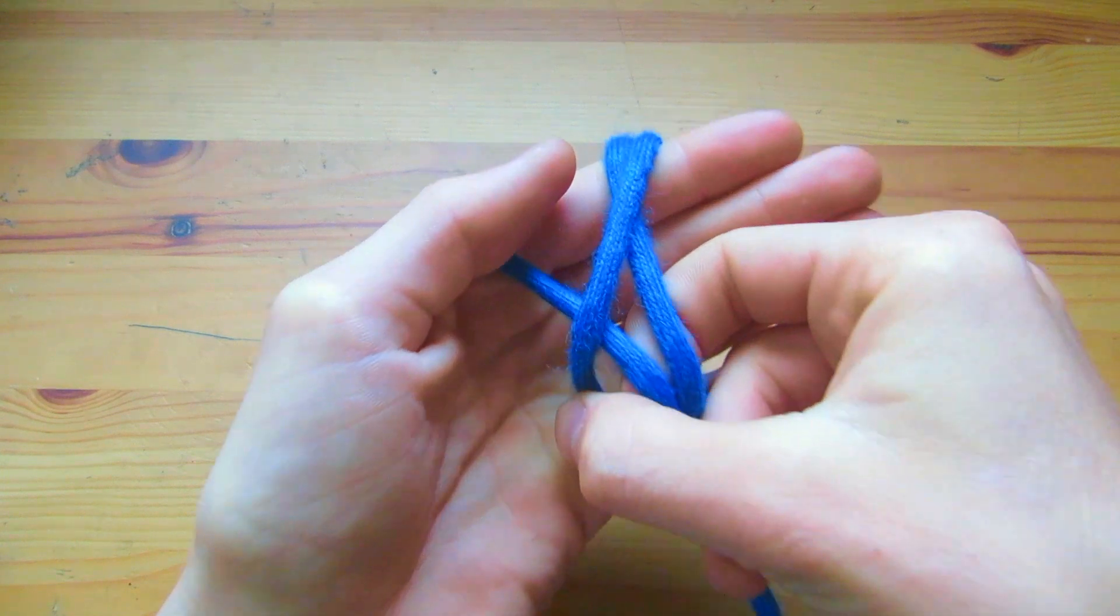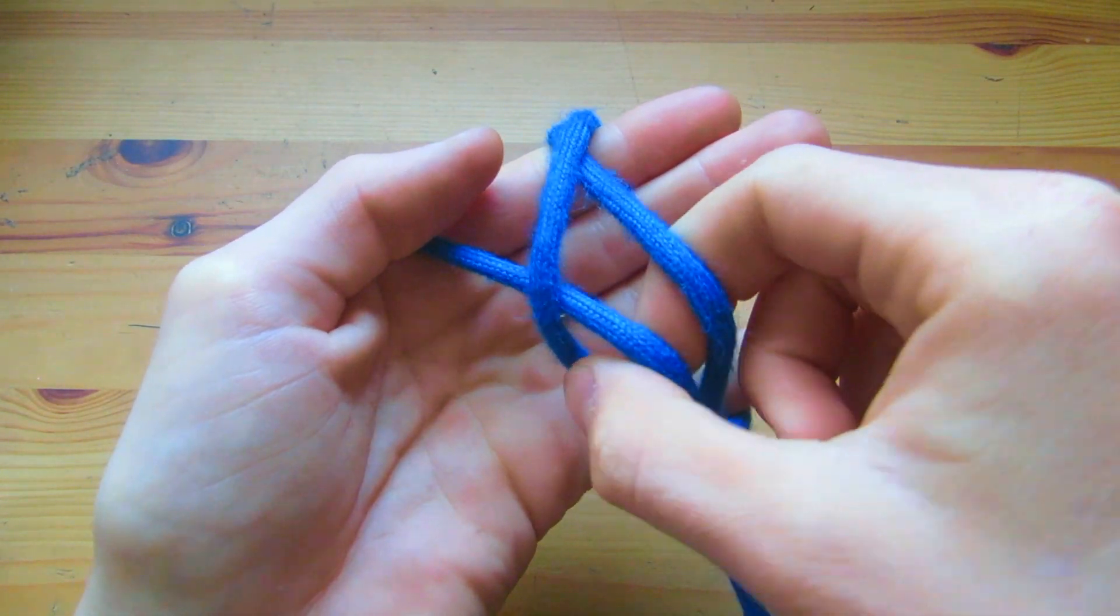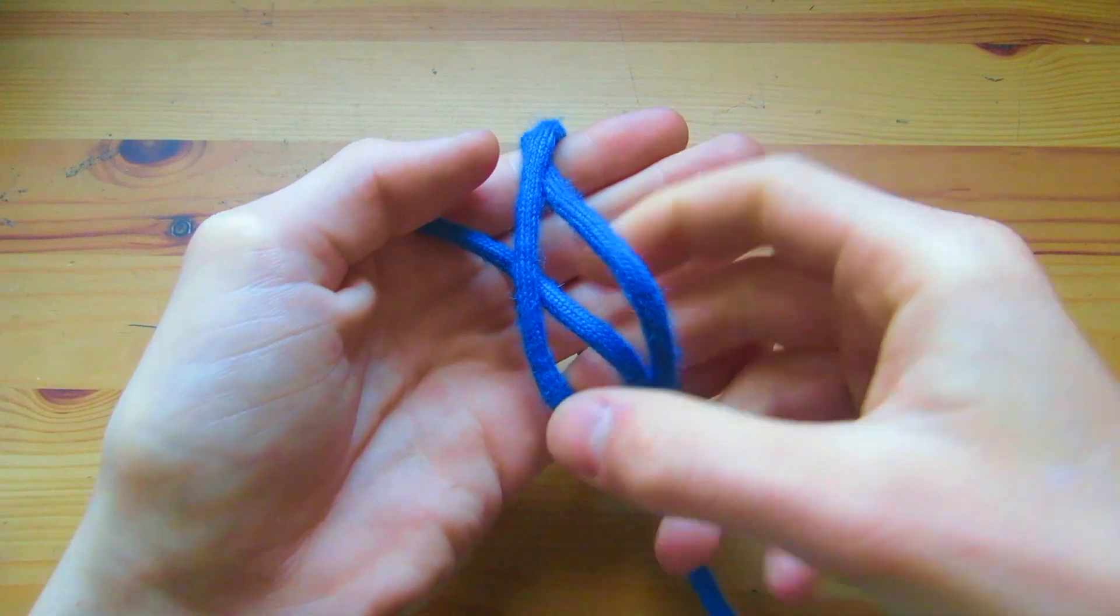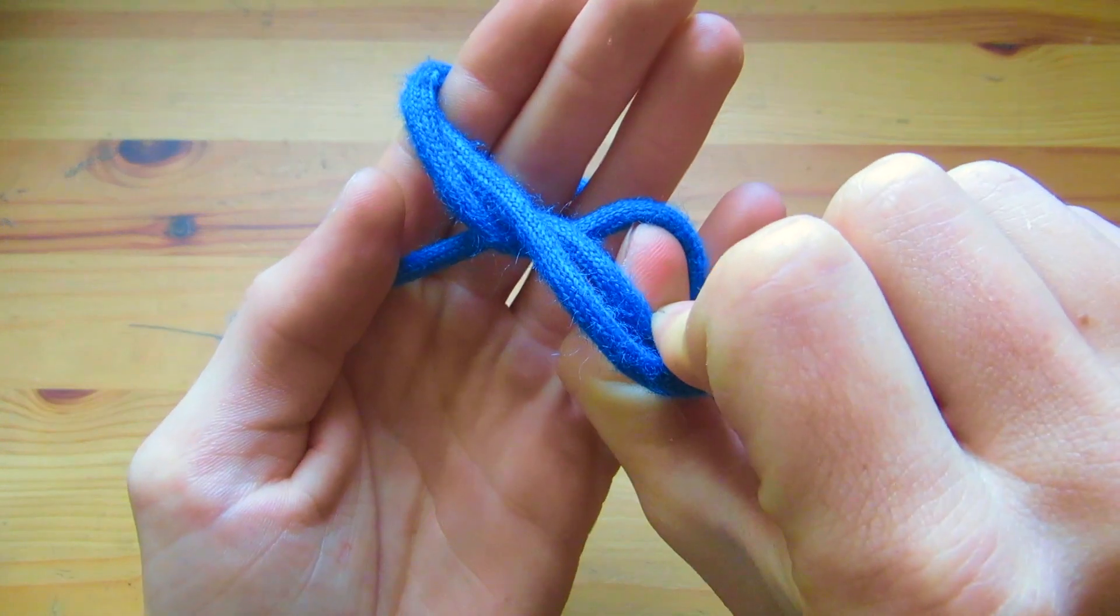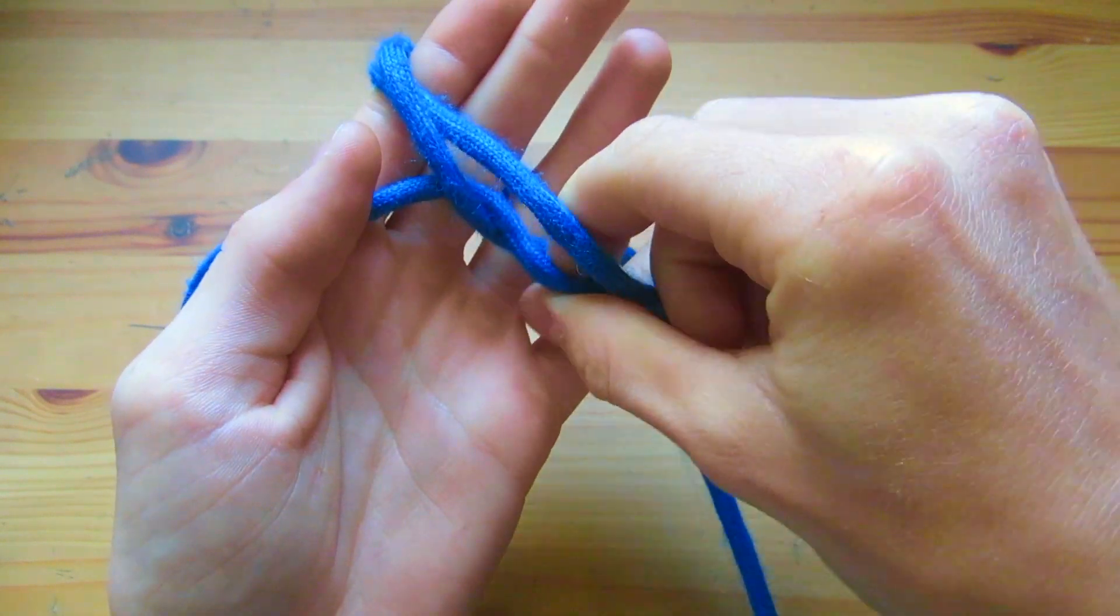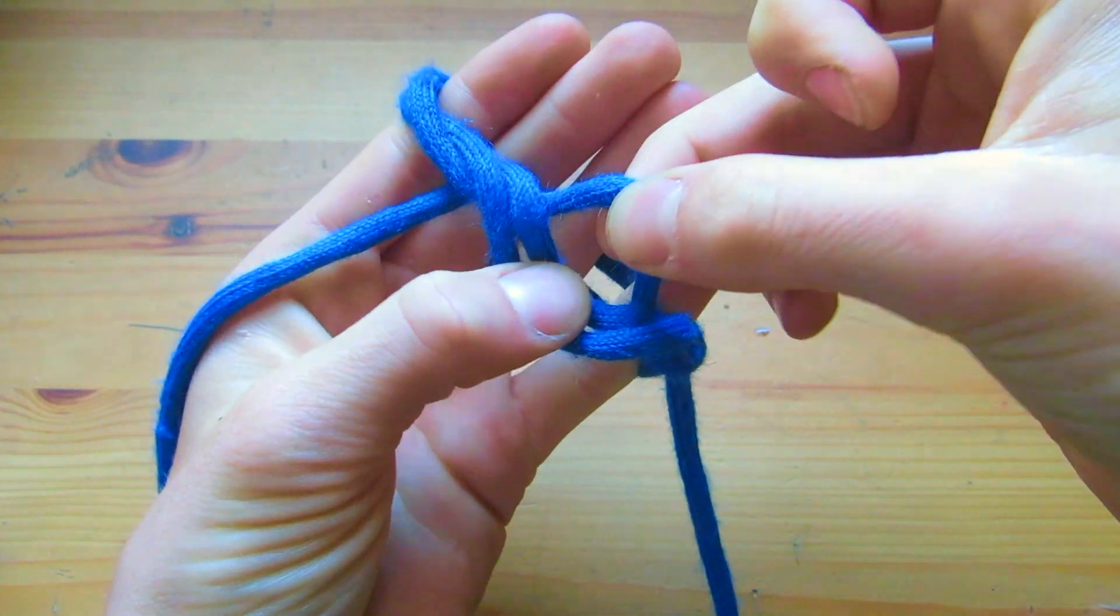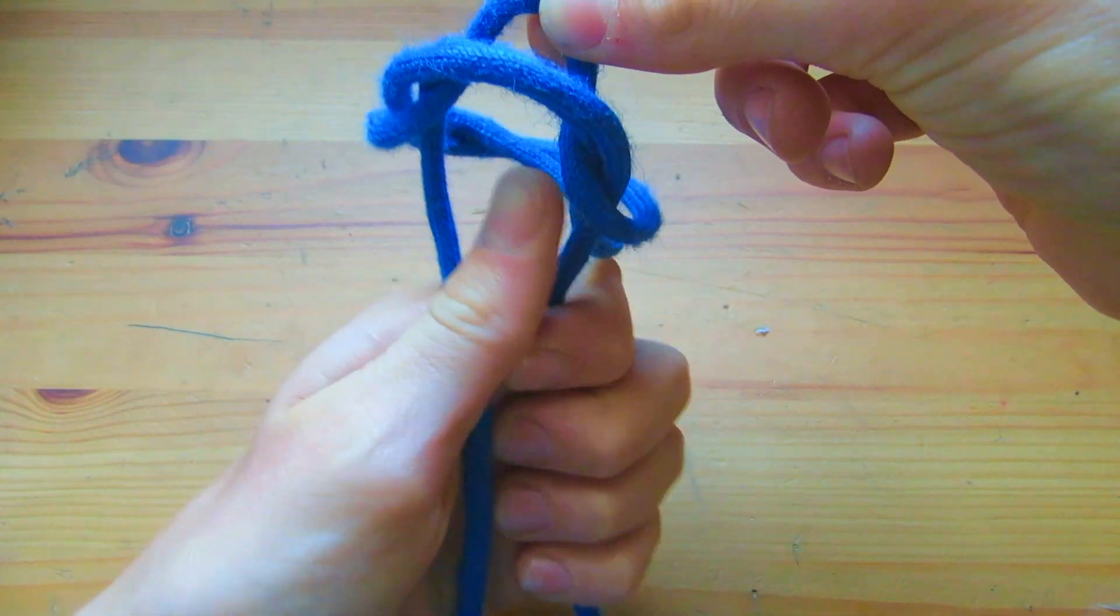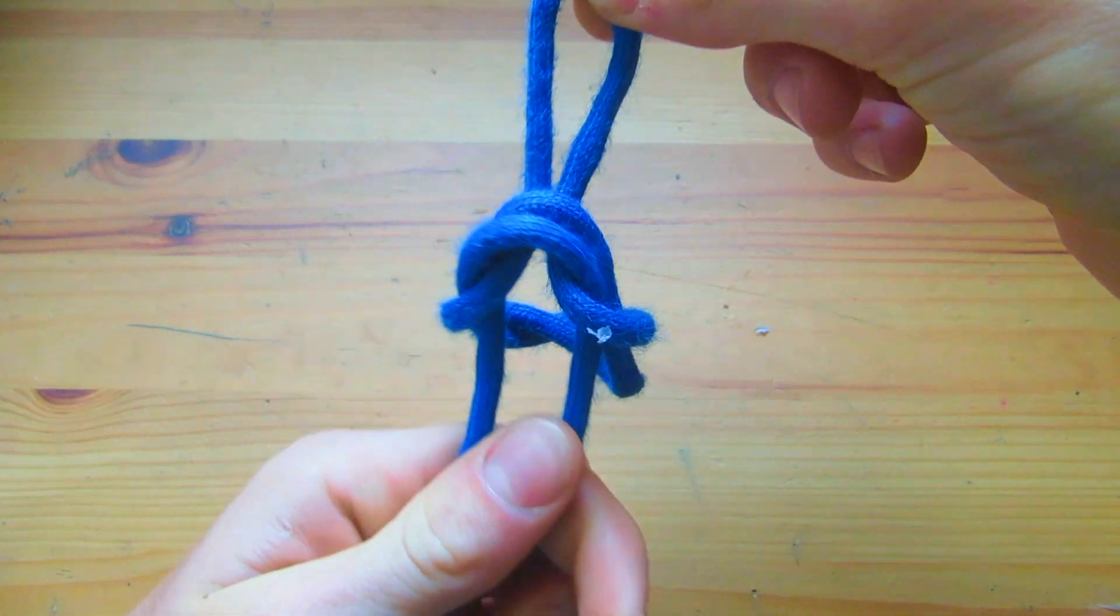I'm going to get these middle two and I'm going to poke this outside one under. So I'm going to poke this one under it. There I got that one. Then you just grab these two and you can just pull.